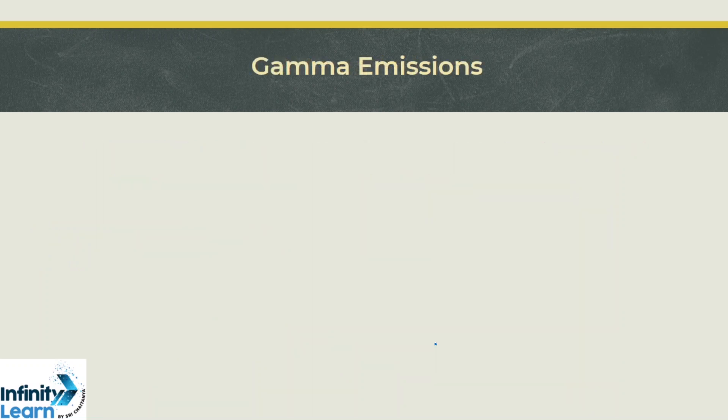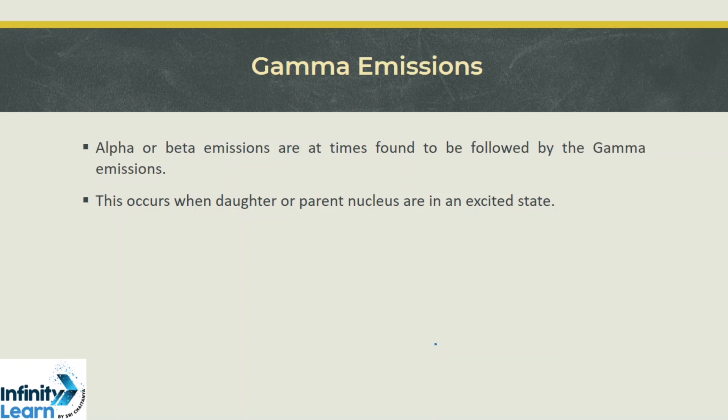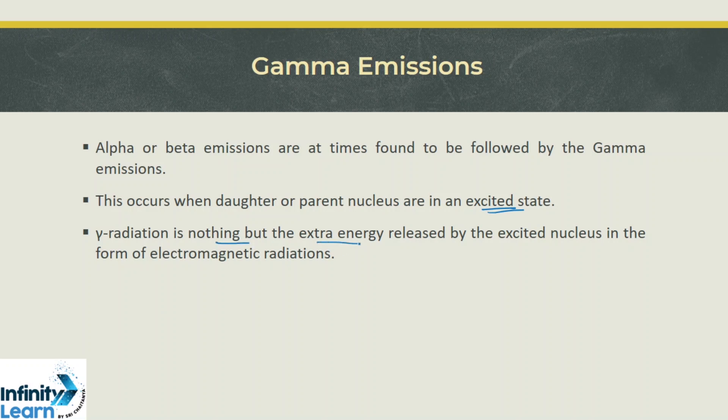Lastly, we have gamma emissions. Alpha or beta emissions are generally followed by gamma emissions because the daughter nuclei are in an excited state with additional energy. To become stable, they give out this excess energy in the form of gamma emission, which is electromagnetic radiation.